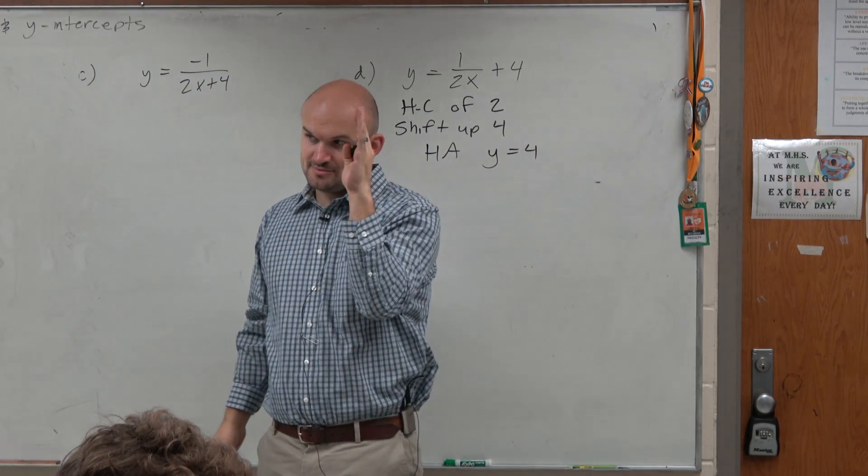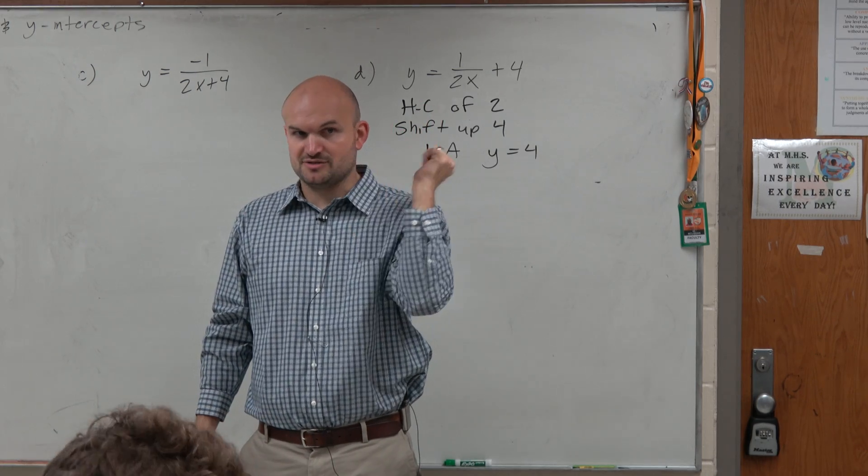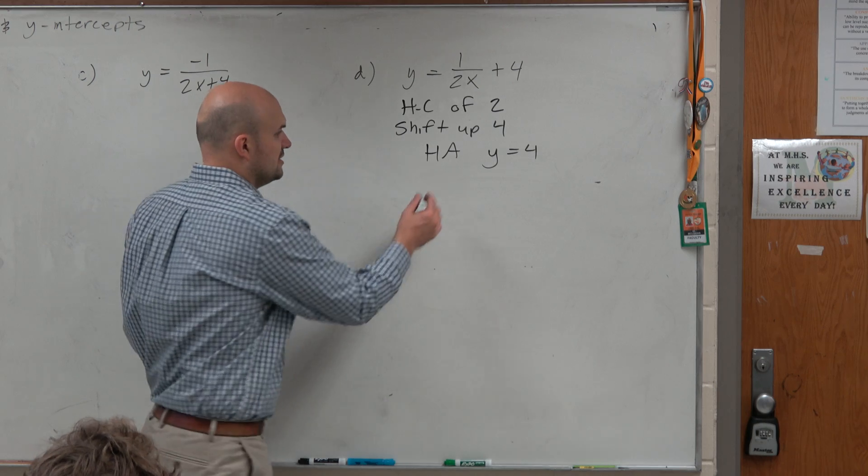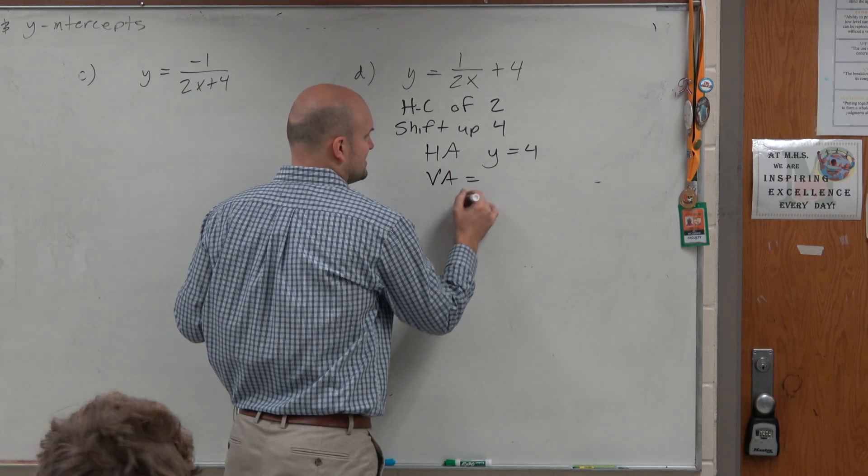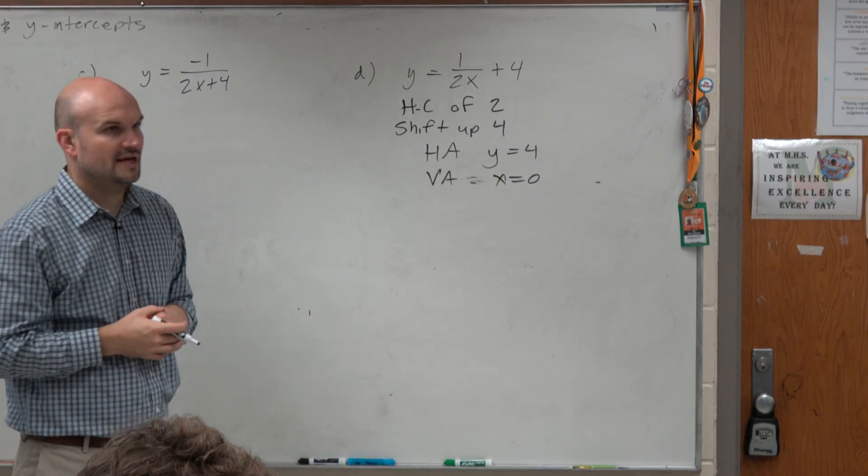My original vertical asymptote was at x equals 0. The graph never moved left or right. These transformations don't move it left or right. So my vertical asymptote remains the same, x is equal to 0.